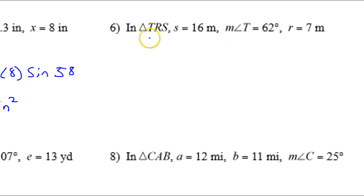And I'm sure number six is the exact same thing. So if I want to find the area, I'm going to have one-half 16 times 7 times the sine of 62. So I got 49.4 meters squared.